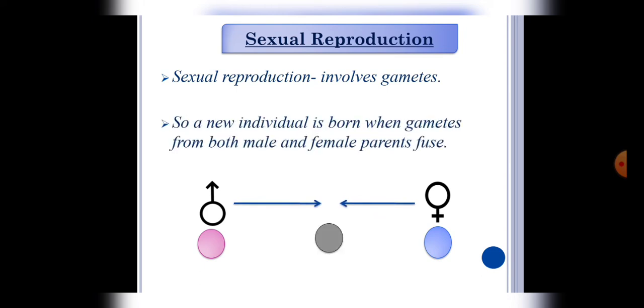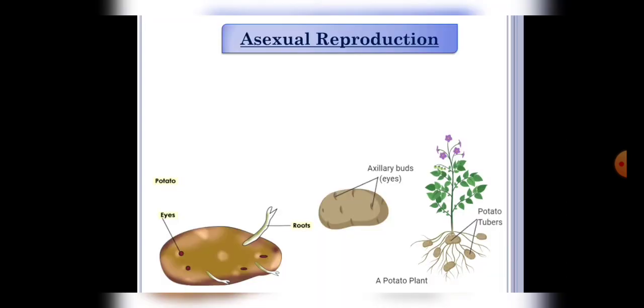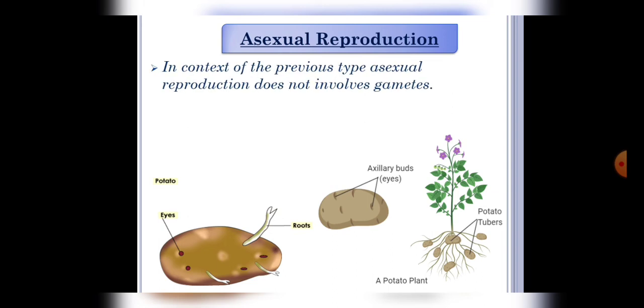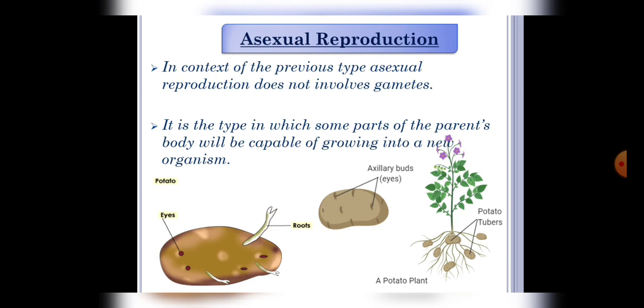Second is asexual reproduction. Students, in this process there is no involvement of gametes or sex cells. But the parent's body parts grow into new organisms.